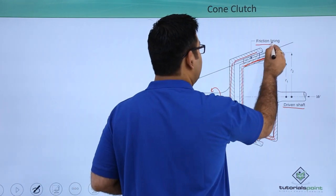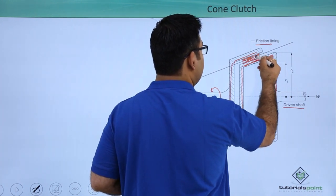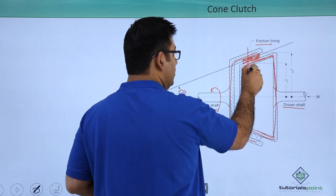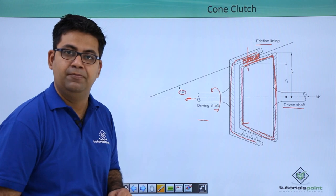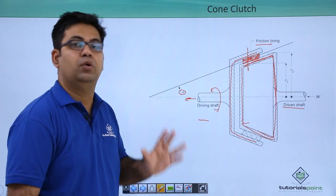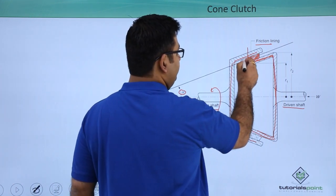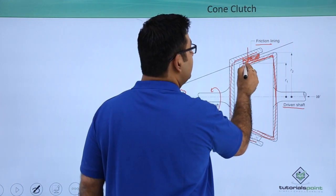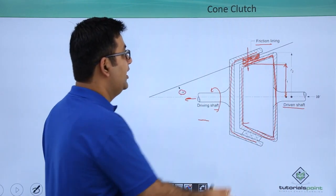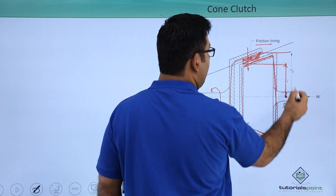When this outer cone mates the inner cone with the help of this friction lining, the drive is transferred from this driving shaft onto this driven shaft. If you look at this friction lining, this distance is r1 and the distance of this point is r2 from the center line.